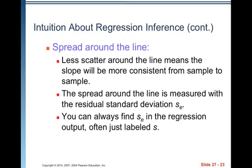Spread around the line. Less scatter around the line means the slope will be more consistent from sample to sample. The spread around the line is measured with the residual standard deviation SE. That's just standard deviation of the residuals, residual error. That's where the E comes in.